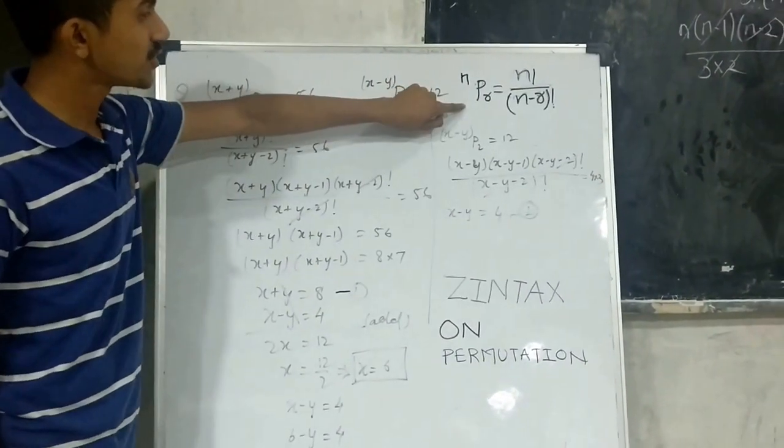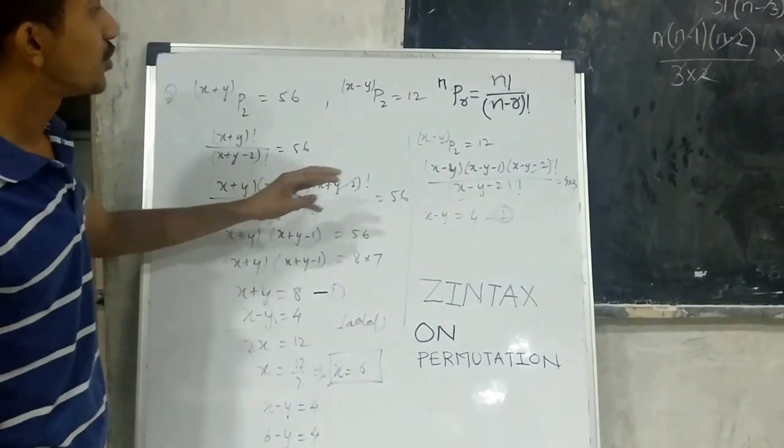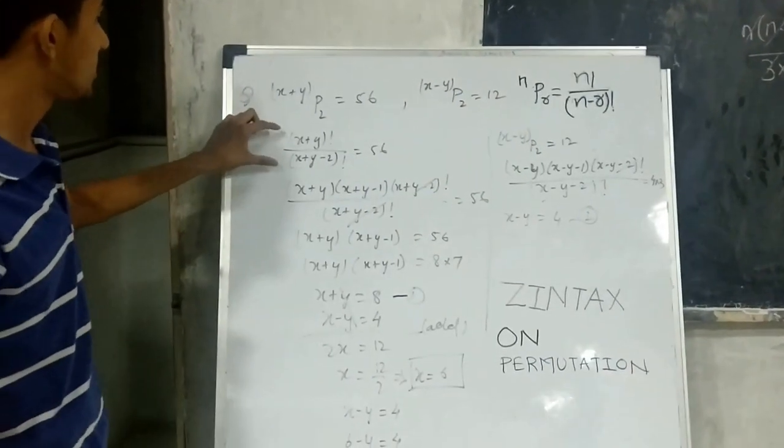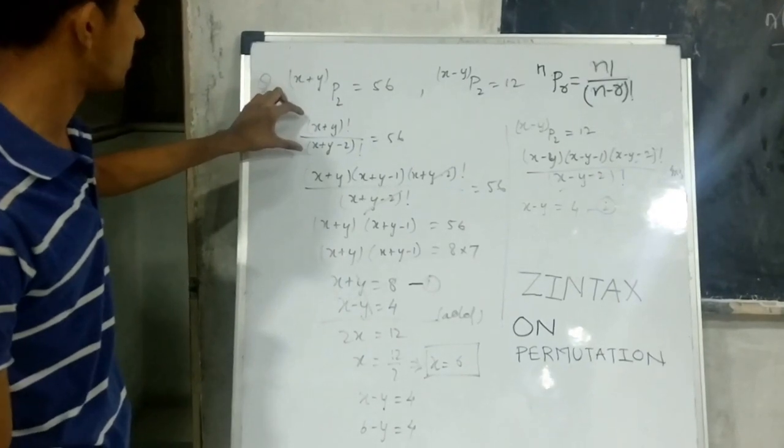So we are going to use this formula: nPr is equal to n factorial upon n minus r factorial. After we will put this equation in this factorial.